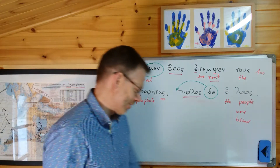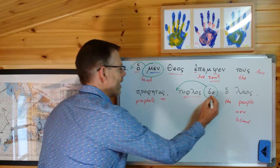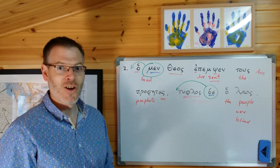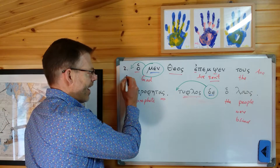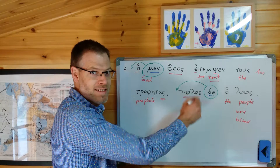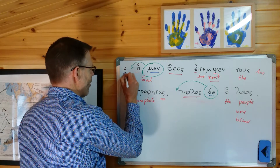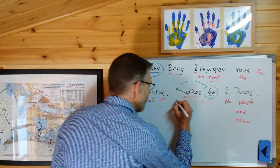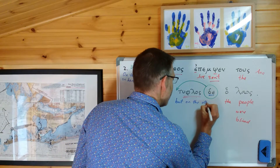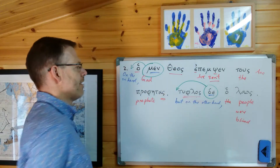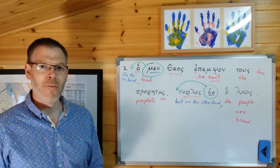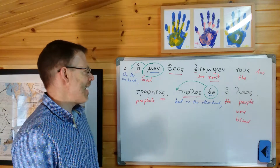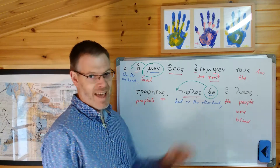Now we come to the important part - what do you do with men and de? I want to encourage you, at least to start with, to translate it woodenly like this: men as 'on the one hand,' and de as 'but on the other hand.' So: 'On the one hand, God sent the prophets, but on the other hand, the people were blind.' The reason for highlighting this: most of the time when you find a men, it will be paired with de. You might even talk about a men-de clause.